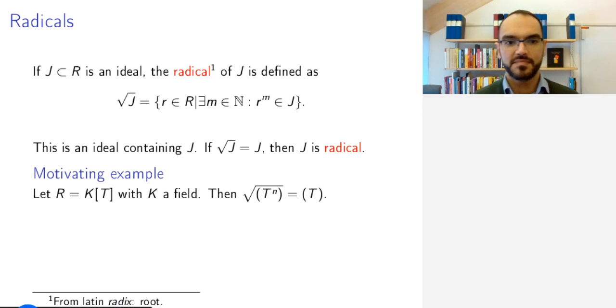What is the motivating example behind all this? Look at the ring of polynomials, let's say in one variable over a field, and consider perhaps the simplest possible polynomials you can think of, powers of the variable. You can look at the ideal that is generated by T to the power N, so these are polynomials that are divisible by T to the power N. The radical of this ideal, it's not difficult to see, is the ideal generated by T. And so these ideals are not radical if N is greater than 1.